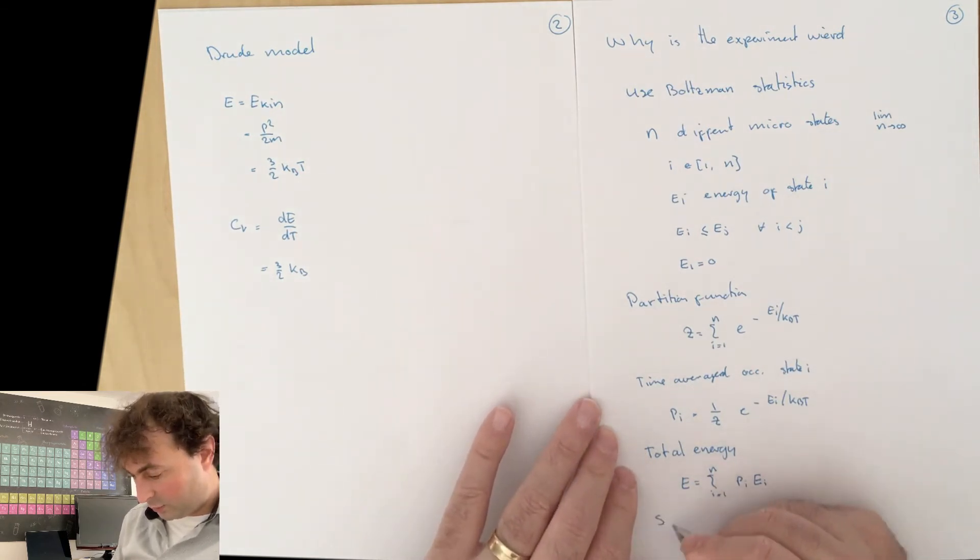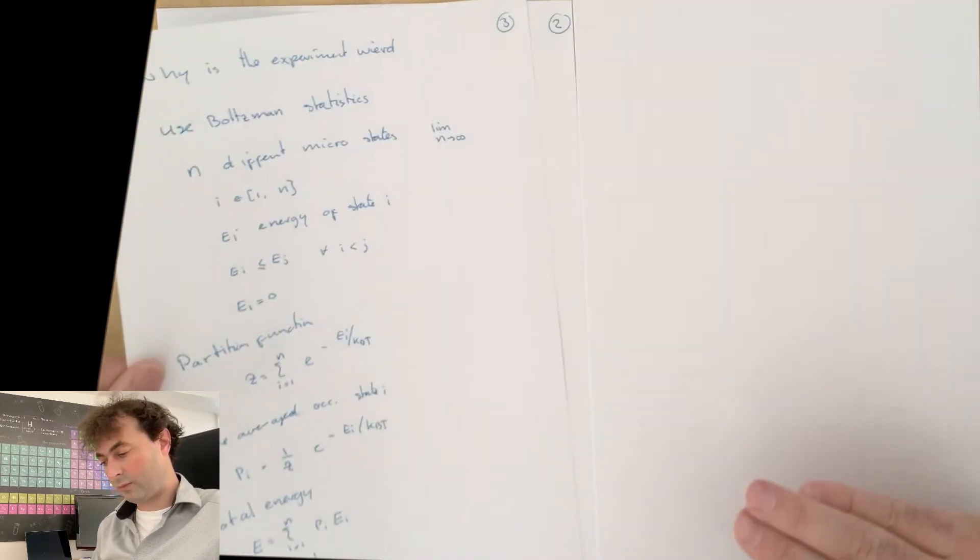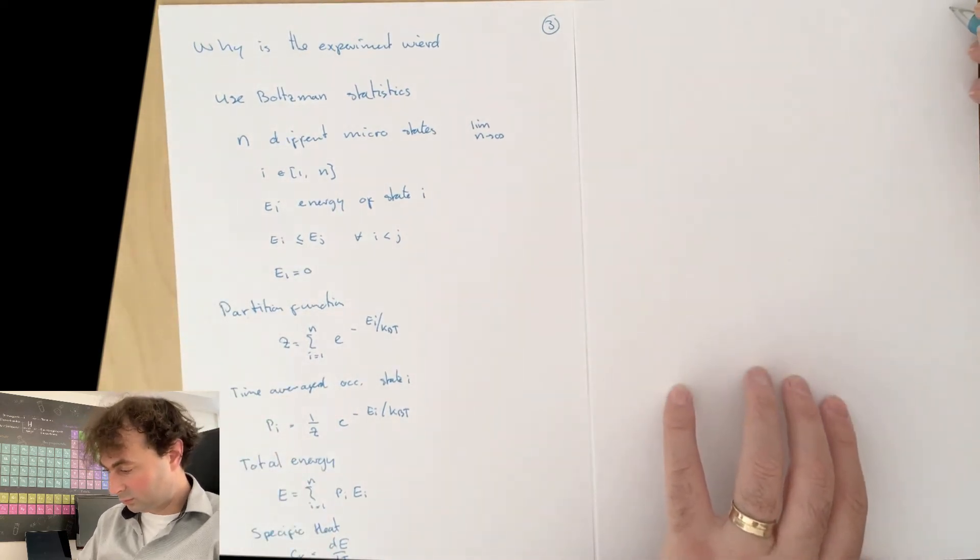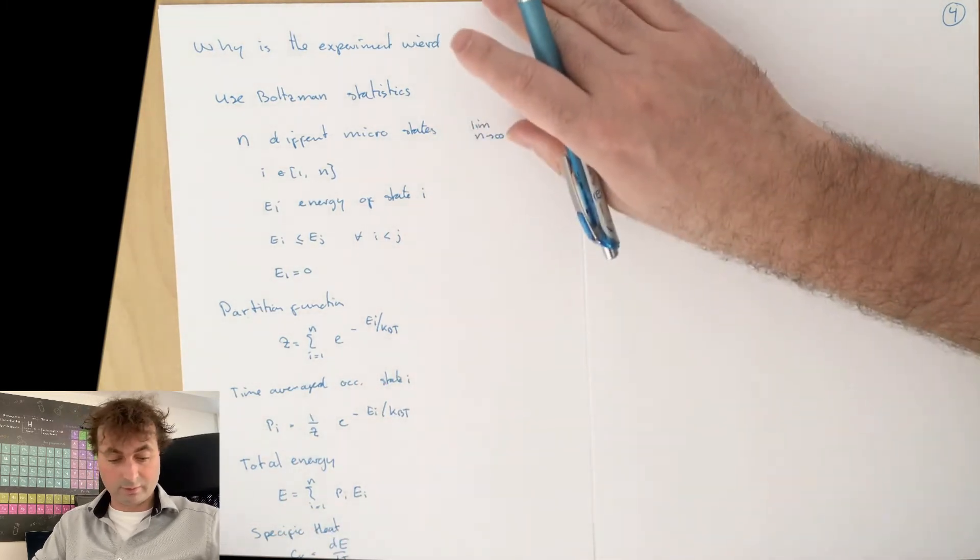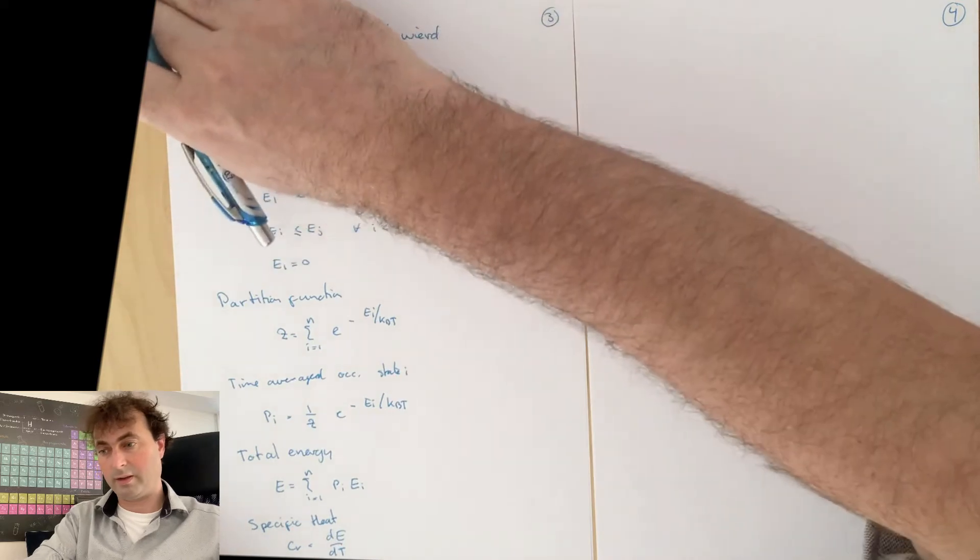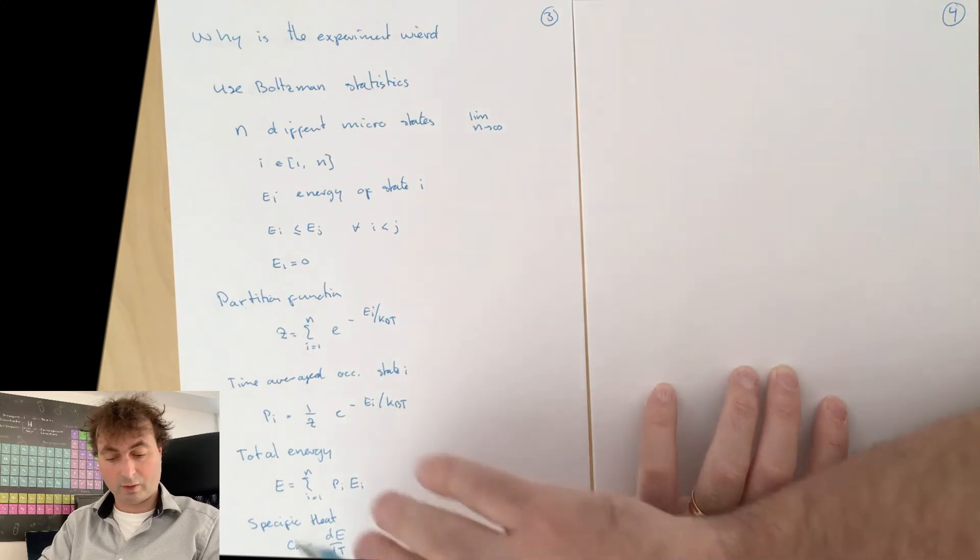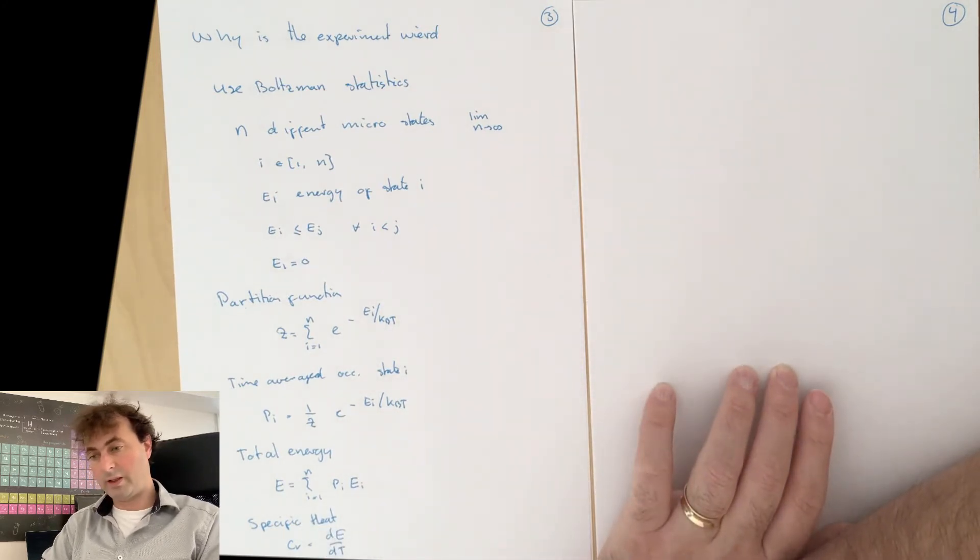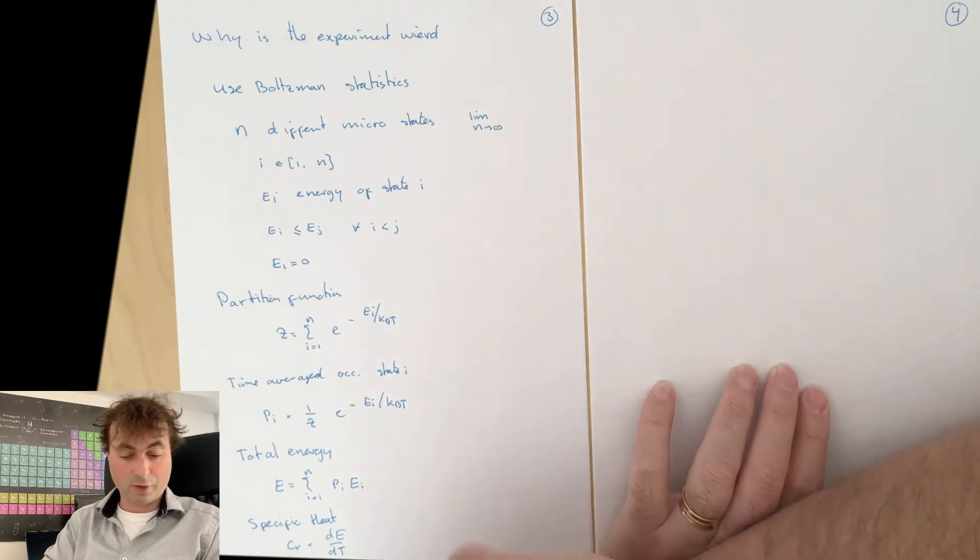Then we can calculate the specific heat, the derivative of the total energy with respect to temperature. So the statement is that for a free kinetic gas, an ideal gas, this becomes a constant. Total energy is linear in temperature, whereas for the experimental observation for a metal, the specific heat goes to zero.